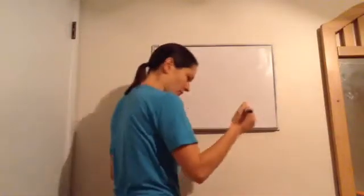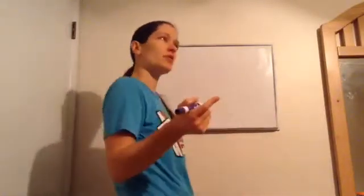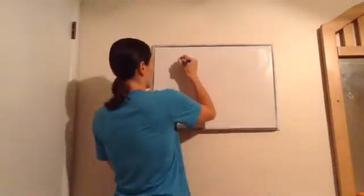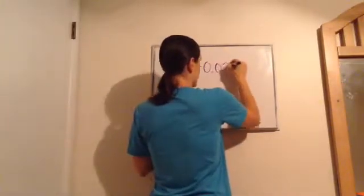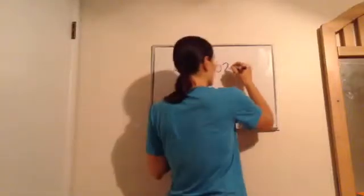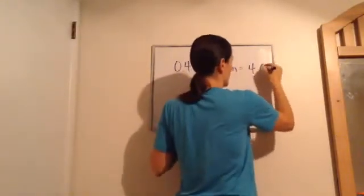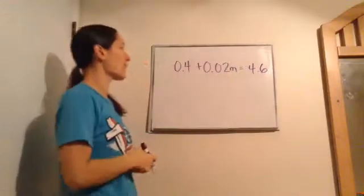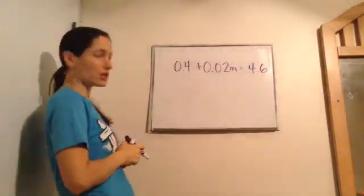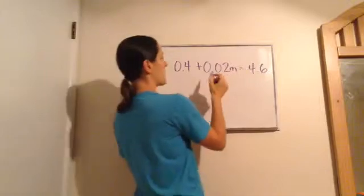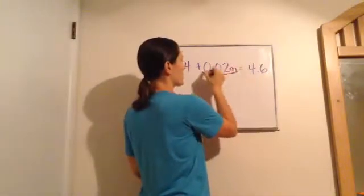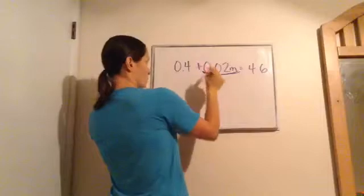Alright. The next part of the lesson is on simplifying decimal equations. And basically, this is kind of a continuation of what we did a week ago, but using decimal numbers. 0.4 plus 0.02m equals 4.6. Based on this, what would I have to do first? Do you remember what we're trying to do? Get the m by itself. Yes. Get the m by itself. But first, it's with something. So, we have to leave it with that first. So, we move the 0.4 to the other side. Yes.